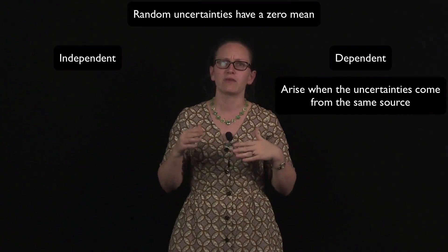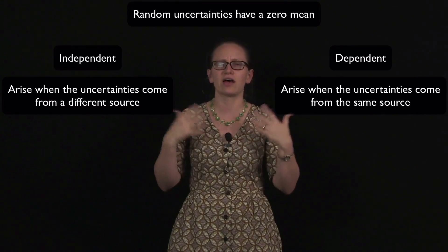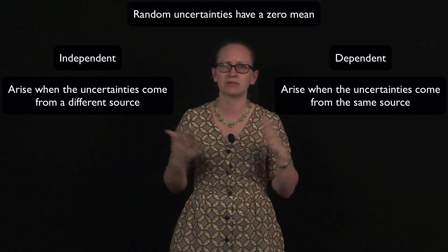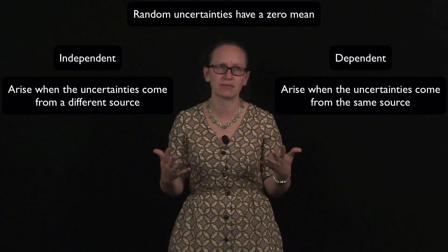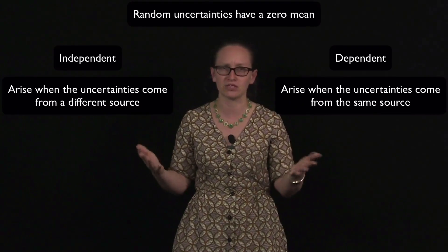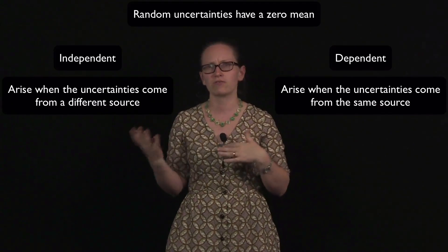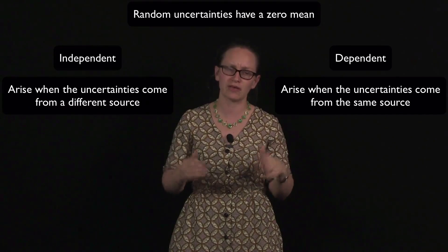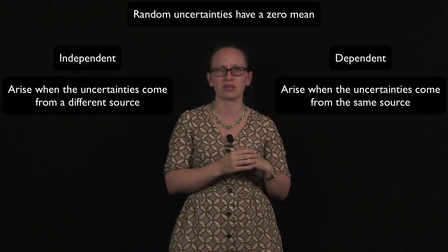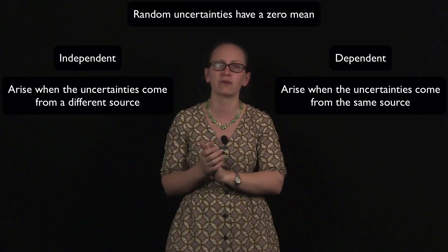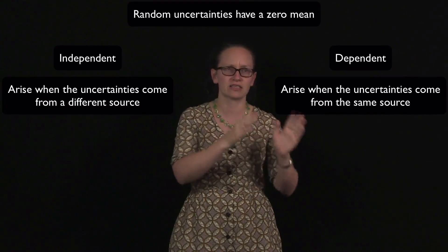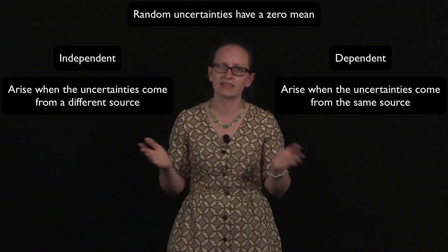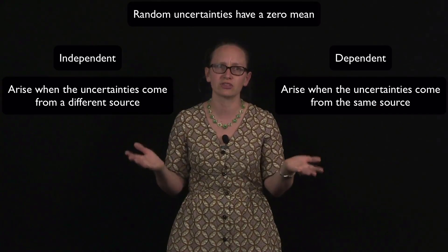Independent uncertainties arise when the uncertainties come from a different source. This usually happens when we use a completely different piece of equipment to make a measurement. For example, if we were measuring the speed, and in order to measure the speed we measure the distance with a tape measure and the time with a stopwatch, the uncertainties in the distance and the time would be independent as they come from completely different sources.